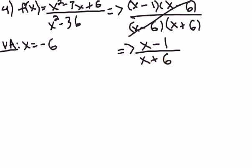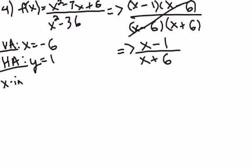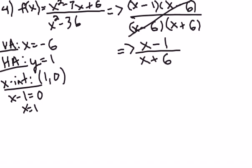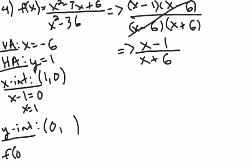The horizontal asymptote — the degrees are the same, so 1 divided by 1 gives a horizontal asymptote of y equals 1. Setting the numerator equal to zero gives an x-intercept of 1, 0. For the y-intercept, plug in zero for x and you get negative one-sixth.